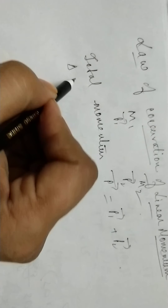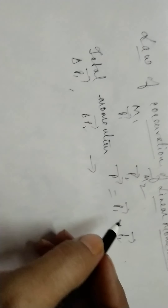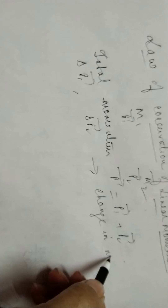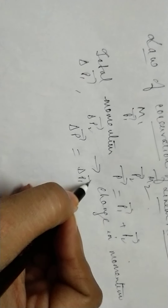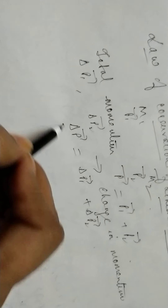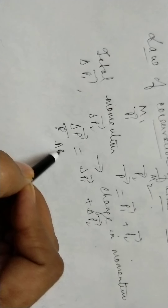Now suppose we consider f1 vector and f2 vector as the two forces acting on masses m1 and m2. We consider delta p1 vector and delta p2 vector as the change in momentum. So what we find is that delta p vector equals delta p1 vector plus delta p2 vector. If we divide it by delta t: